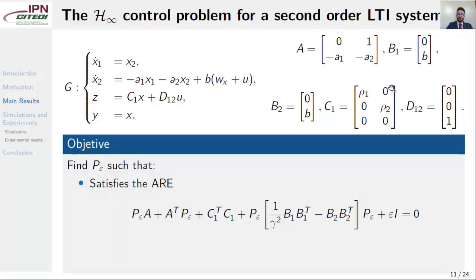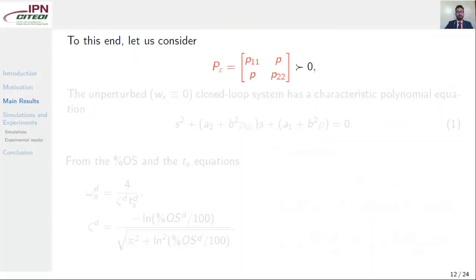What's the objective of our design? To find p-epsilon such that it satisfies the algebraic Riccati equation, this one here, and also that the closed-loop system with u equals minus b2 transpose p-epsilon x guarantees a desired settling time and percent overshoot.